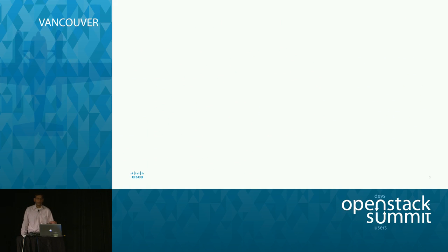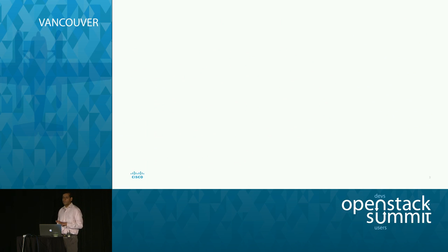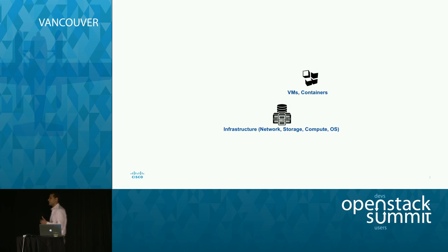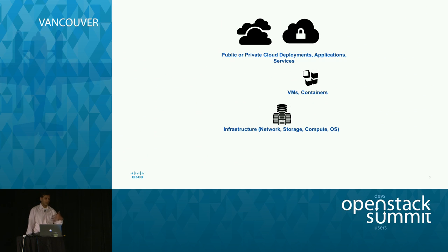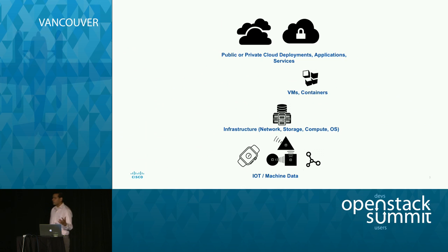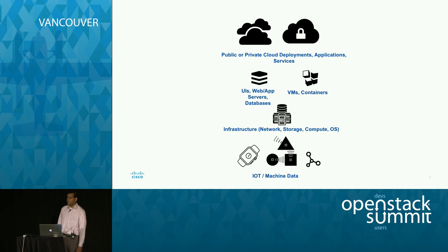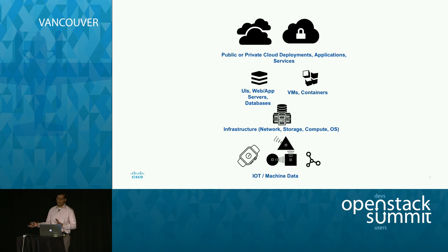The problem that we're dealing with is the digital exhaust that comes out from your OpenStack environment. This comes from a lot of different places — from your infrastructure, from the VMs and containers running on it. It could be an internal environment with more openness in your network, or external environments where networks are restricted from each other. It could come from connected devices interacting in your environment, or from the application stacks themselves.